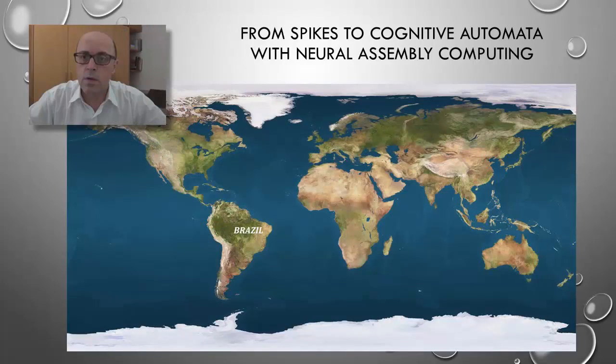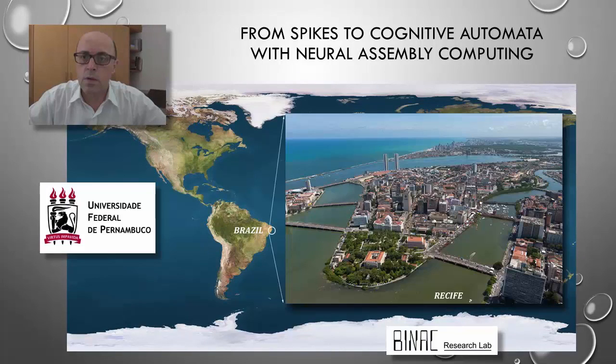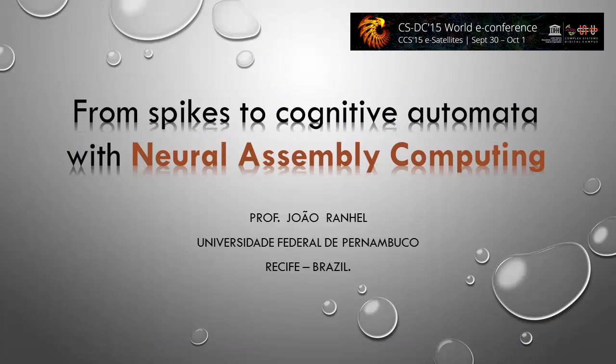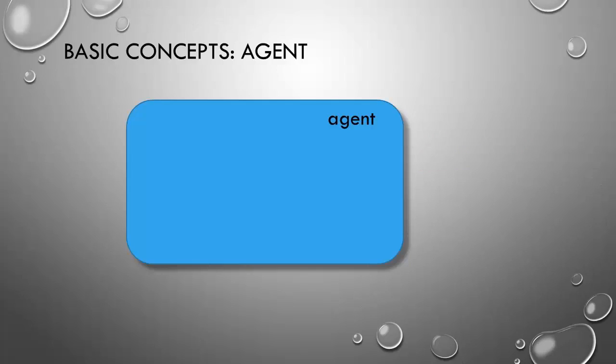Hi, my name is João Ranhel, I'm from Federal University of Pernambuco, Recife, Brazil. I'm going to talk about neural assembly computing, which explains how groups of spiking neurons process information, and how this processing may result in intelligent behavior, maybe in cognition. Let's start with a concept from artificial intelligence, the concept of agent.